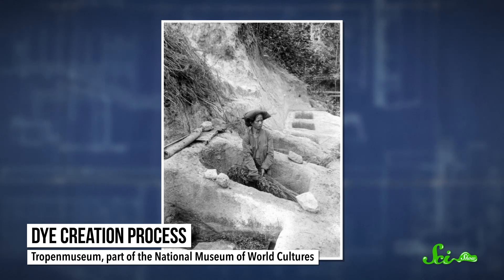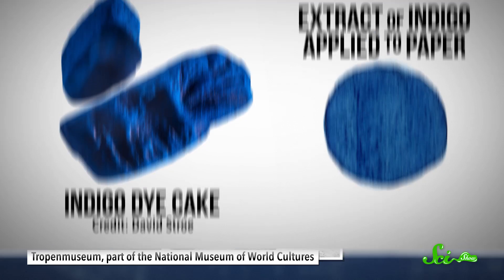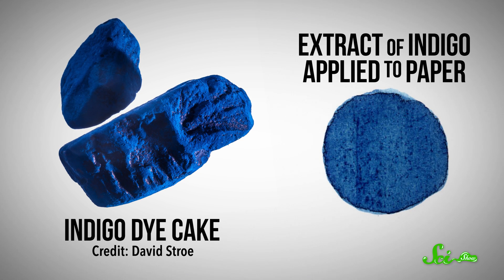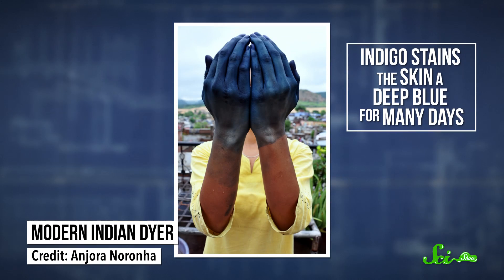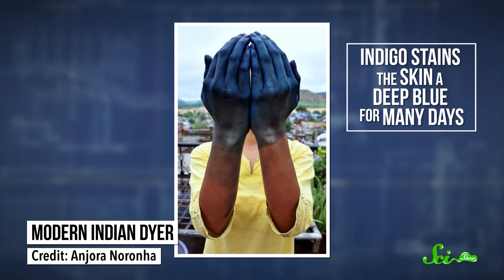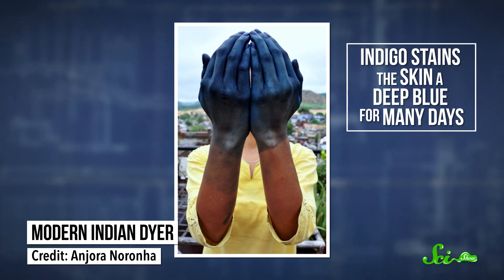To create the dye, people crushed the plant's leaves and let them ferment in water over a period of time. Eventually, the liquid was drained and mixed with lye, molded into cakes, dried, and pounded into powder. Dyers would then mix that powder with water and other substances in soaking vats to get the exact purpley-blue shade they wanted.